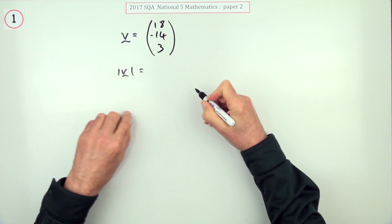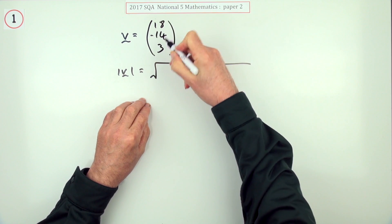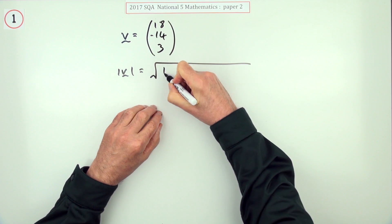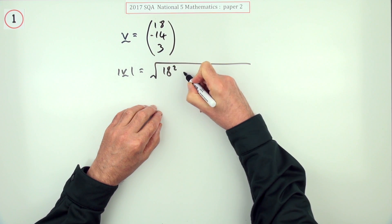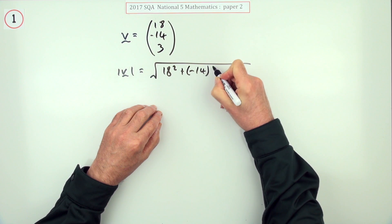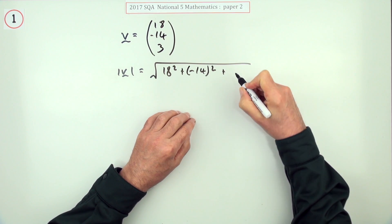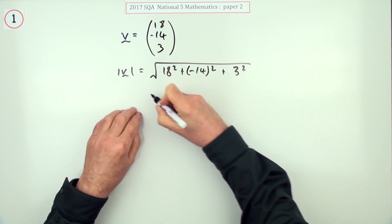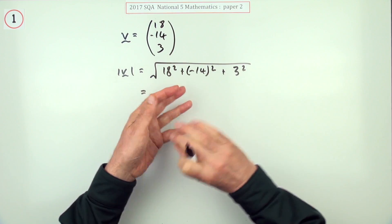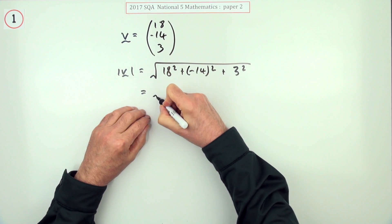That's just Pythagoras in three dimensions. Square them, add them, and take the square root. So it's 18 squared, negative 14 squared - remember to tuck that wee negative inside the squaring - plus 3 squared. Now it is a calculator paper, so you could just type that all into your calculator in one go, but I'll just see how far I go before I revert to that.